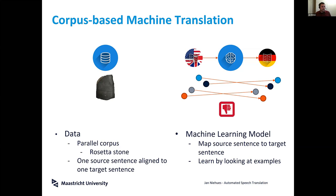The second component is the machine learning model, which should learn how to map a source language sentence into a target language sentence. For simplicity, let's use a very simple example with dots: we want to map the dots on the left to the dots on the right, with a correspondence between them.